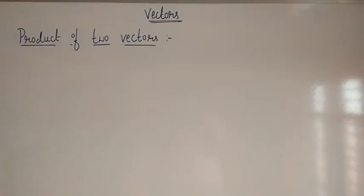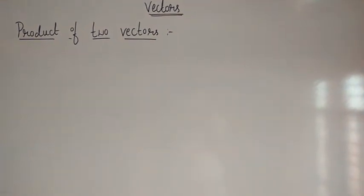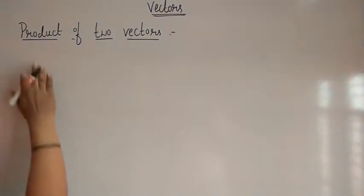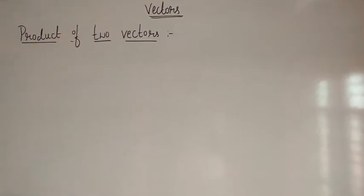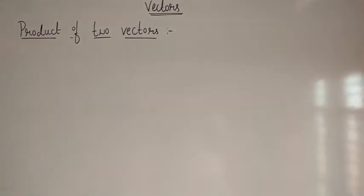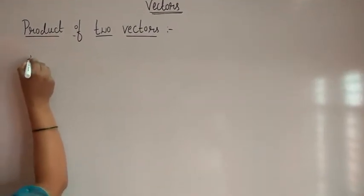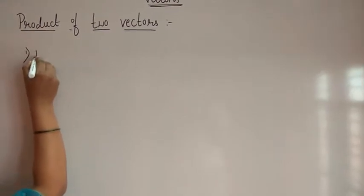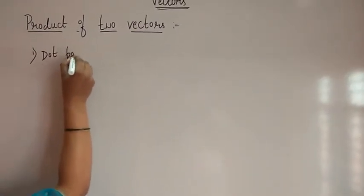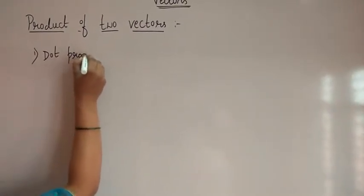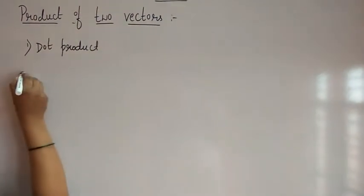Good morning everyone. Today, let us study about product of two vectors. There are two forms of product of two vectors: one is dot product and another one is cross product.